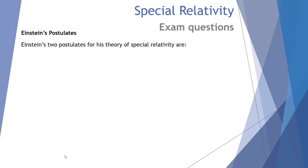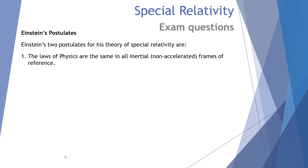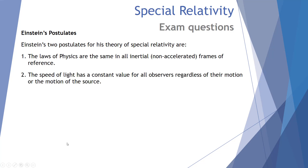At the heart of this topic — special relativity — we have Einstein's postulates. The first is that the laws of physics are the same in all inertial, that is non-accelerated, frames of reference. Number two: the speed of light has a constant value for all observers regardless of their motion or the motion of the source. It's the one true universal constant — the speed of light.